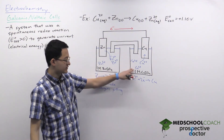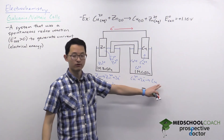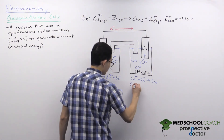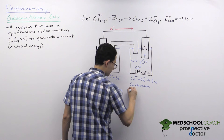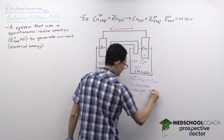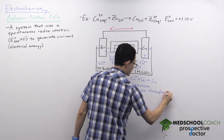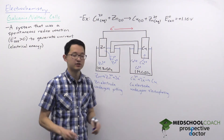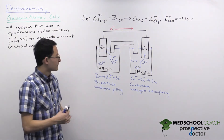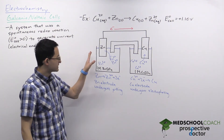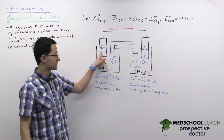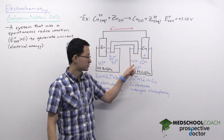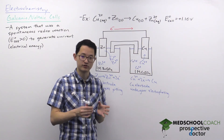The half-reaction at the copper electrode is: Cu²⁺ + 2e⁻ → Cu(s). The copper cations dissolved in solution accept electrons and form solid copper metal, which plates on top of the copper electrode. This is called electroplating — electricity is used to plate a layer of metal on top of the copper electrode, so the copper electrode grows bigger over time.